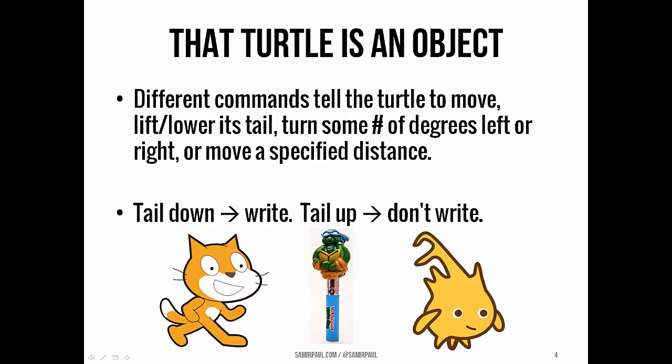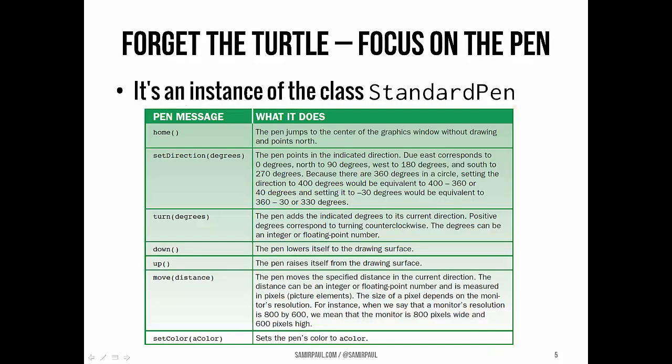That turtle is an object, and that's how we're going to work with it. This is really similar to what you might have seen in Scratch or Snap, if you've ever worked in either of those two visual programming languages. We actually won't think in terms of the turtle itself — we'll just focus on the pen tied to its tail. That pen is an instance of the class StandardPen. Later we'll encounter some other types of pens, but for now this is the one we'll work with.